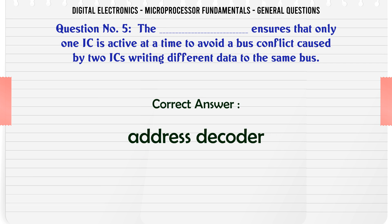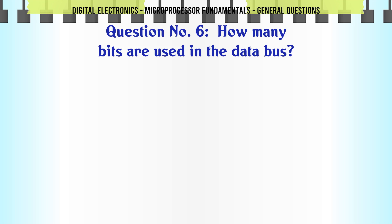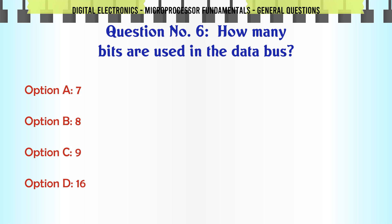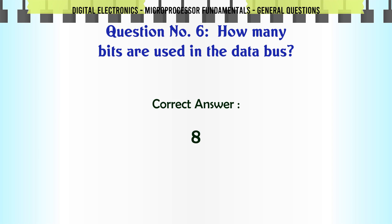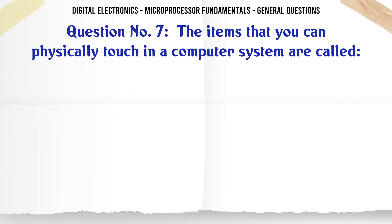How many bits are used in the data bus? A. 7, B. 8, C. 9, D. 16. The correct answer is 8.